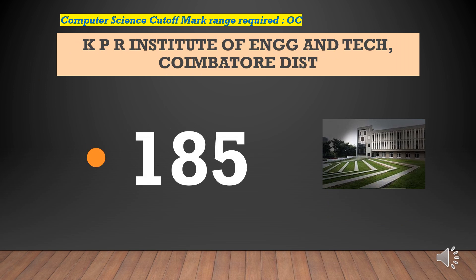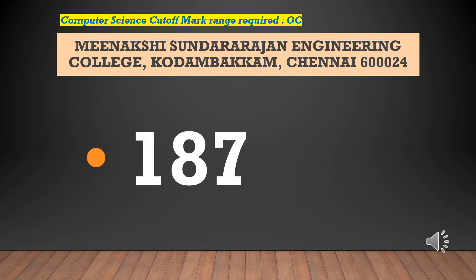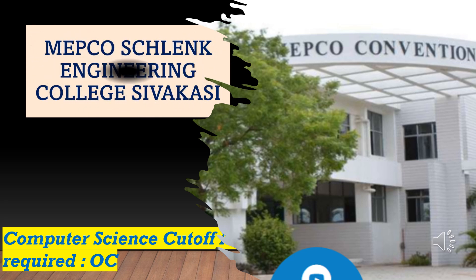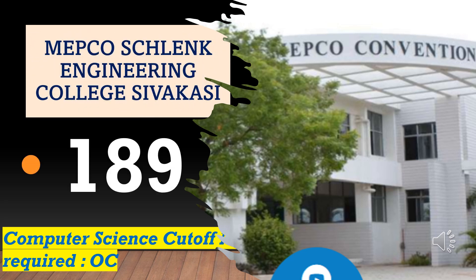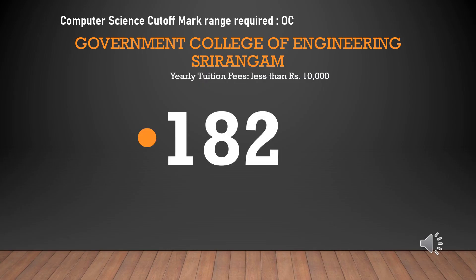KPR Institute of Engineering and Technology — cut-off required for CSEOC is 187. Meenakshi Sundarararajan Engineering College — cut-off required for CSEOC is 187. MEPCO Schlenk Engineering College — cut-off required for CSEOC is 189. Government College of Engineering Srirangam — cut-off required for CSEOC is 182.